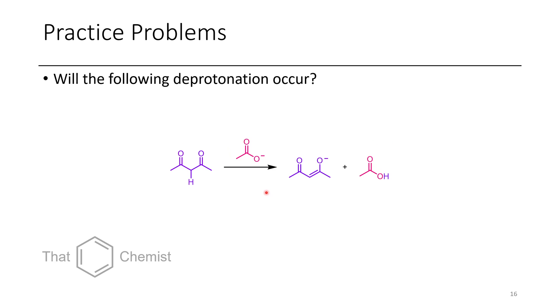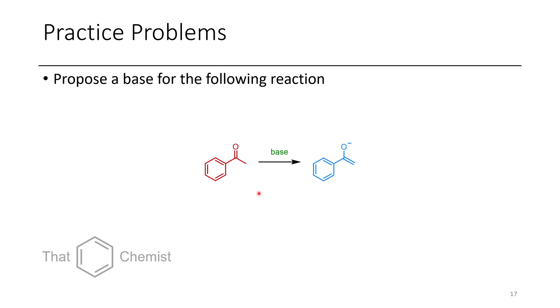In the next problem, predict whether or not the following reaction will occur, and if not, why not. In the final problem, propose a base that can deprotonate acetophenone to make this enolate. With that, I hope this has been a useful video on pKa's — it would really help out the channel if you left a like and subscribed. Have a great day!